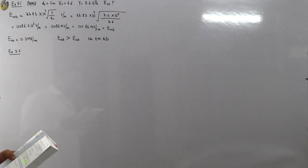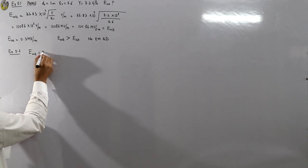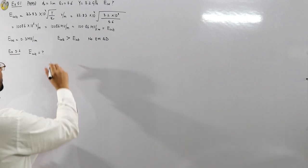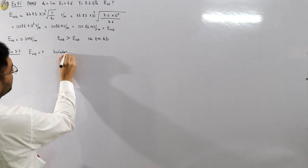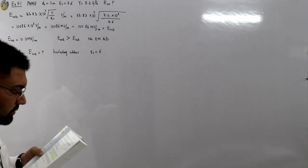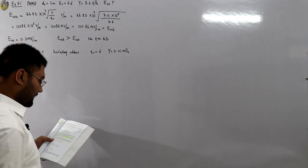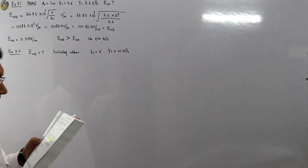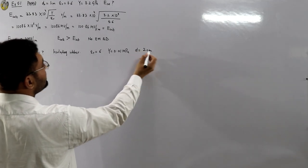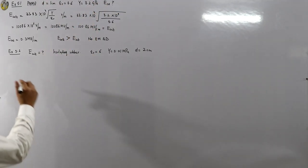In Example 5.2, we consider insulating rubber. Find the critical electric field for the possibility of electromechanical breakdown under uniform field conditions. The material has a dielectric constant of 6, a modulus of elasticity of 0.01 MPa, and the sample thickness is 2 cm between plate electrodes. We do not need the thickness in this formula.